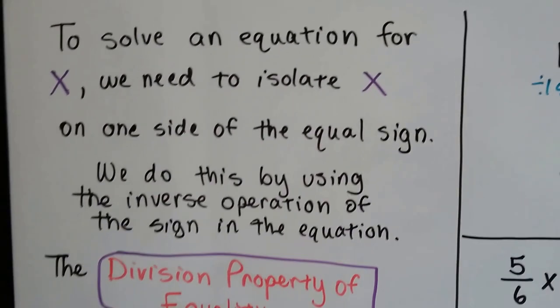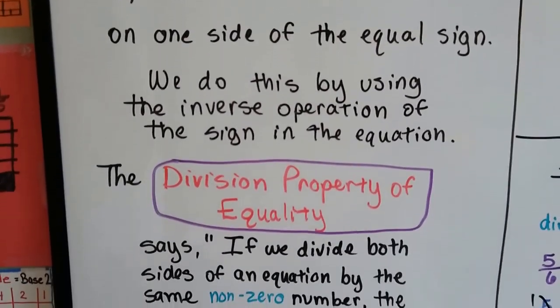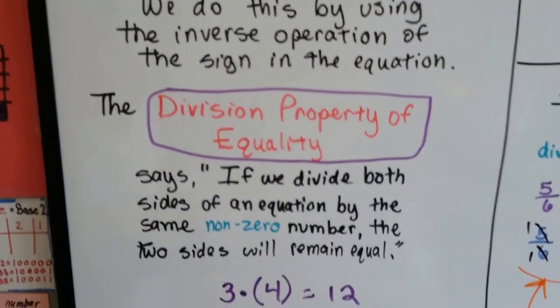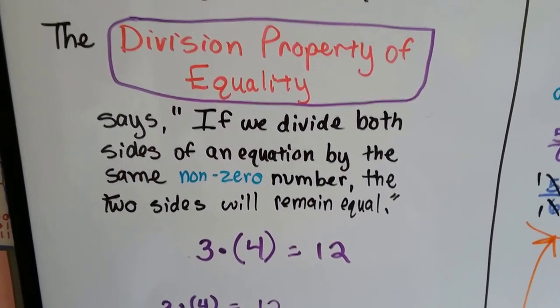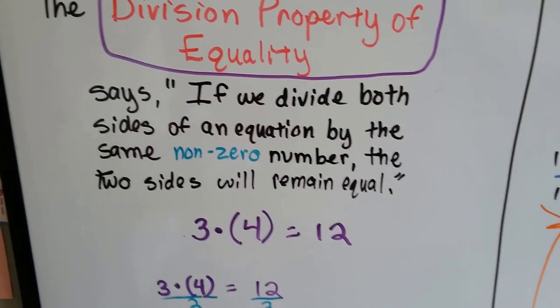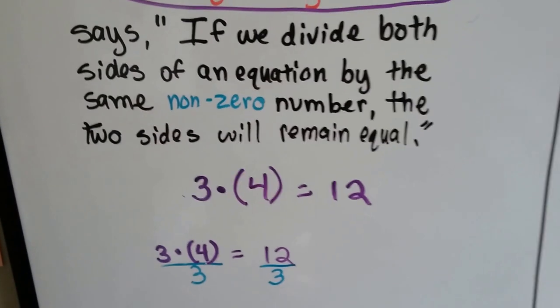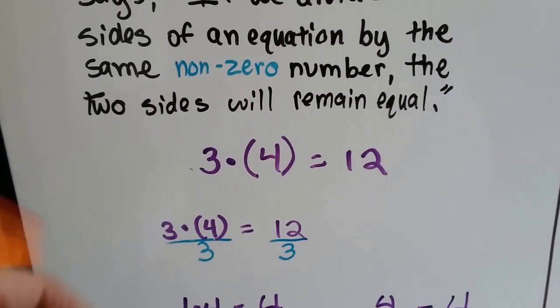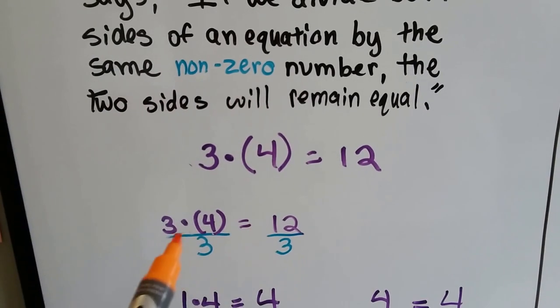To solve an equation for x, we need to isolate x on one side of the equal sign, and we do this by using the inverse operation of the sign in the equation. The division property of equality says if we divide both sides of an equation by the same non-zero number, the two sides will remain equal. So if we have 3 times 4 equals 12, and we divide both sides by 3,